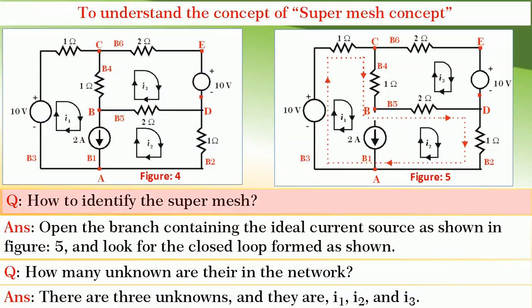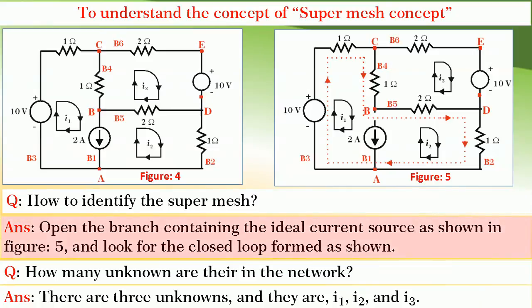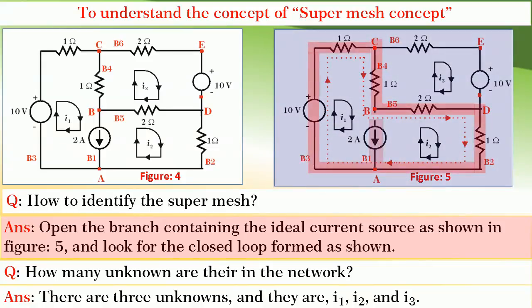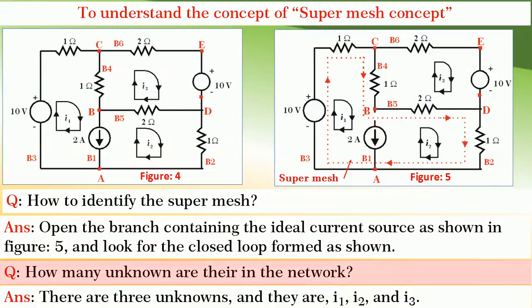Now, to identify the super mesh, open the branch containing the ideal current source as shown in figure 5 and look for the closed loop formed — that is the super mesh. There are 3 unknowns I1, I2 and I3, and hence we need 3 balanced equations to solve this network.